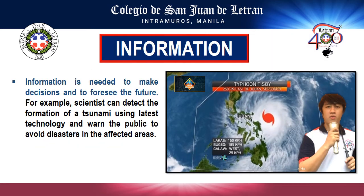Information is needed to make decisions and to foresee the future. When information is being processed, this is called knowledge. Knowledge can be used to help us fulfill daily tasks. For example, knowledge is used to predict tomorrow's weather and decide if there is a need to bring an umbrella. Another example: scientists can detect the formation of a tsunami using the latest technology and warn the public to avoid disasters in the affected areas using the knowledge obtained from the said technology.